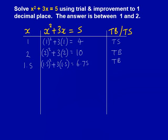The next value we put into our formula is 1.5. In the same way on the calculator, using the brackets, we get the answer of 6.75. We're trying to get the answer of 5, so this is still too big.